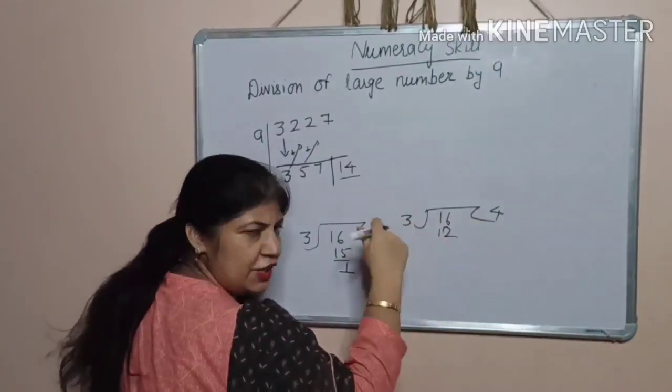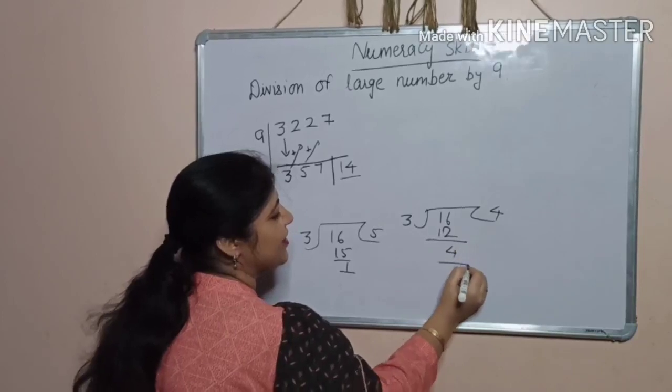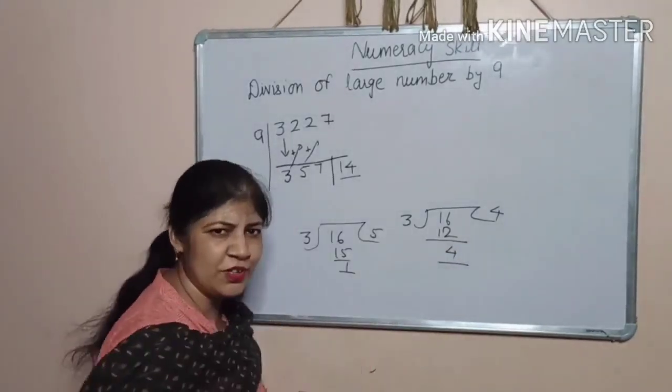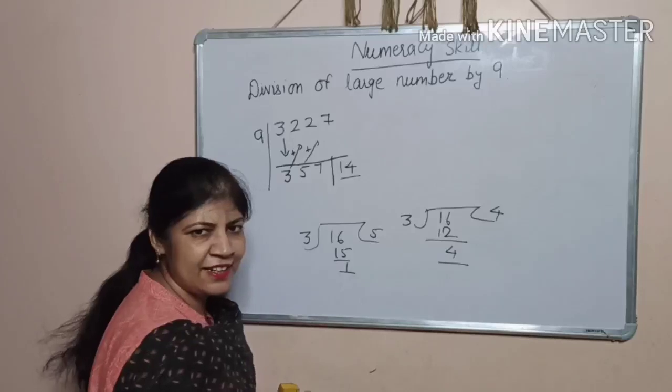Now, remainder is 4. Now, remainder is 4. Which one is correct?